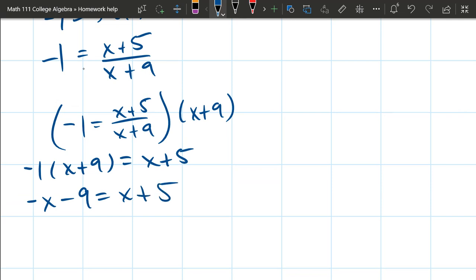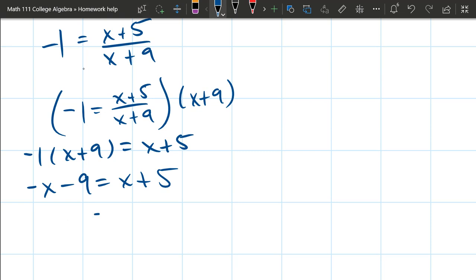Combine like terms. This is just a linear equation. Add the x to the other side, and you've got 2x. Subtract 5, and -9 minus 5 is -14. Divide by 2, and that's your answer.